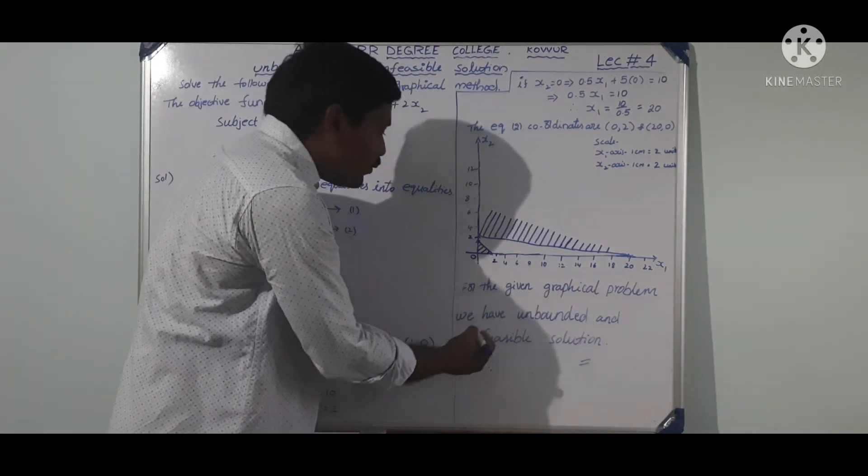The problem is: solve the following LPP by using the Graphical Method. The objective function is maximize z equal to 5x1 plus 2x2, subject to constraints: x1 plus x2 less than or equal to 1; 0.5x1 plus 5x2 greater than or equal to 10; and non-negative restriction x1, x2 greater than or equal to 0.